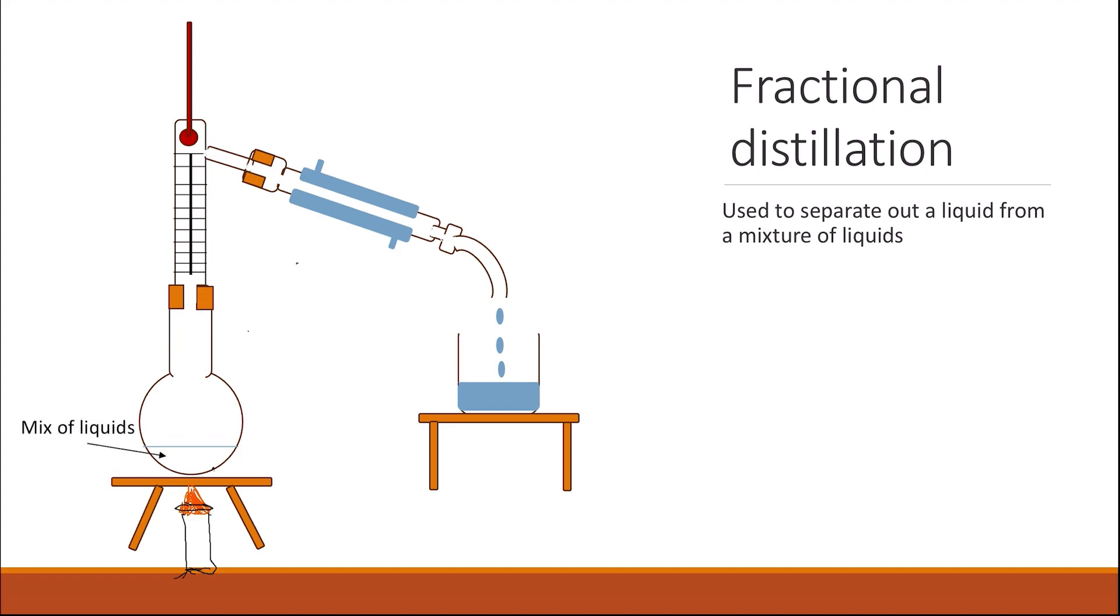In fractional distillation, you have the mixture of liquids in the round-bottom flask, and then you use a Bunsen burner to heat the liquids, where the different liquids will start to vaporize and give you vapors of different liquids. And then you have the fractionating column attached to your round-bottom flask. The fractionating column has a higher temperature at the bottom and a lower temperature at the top.